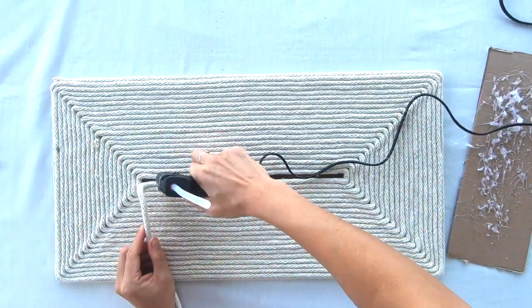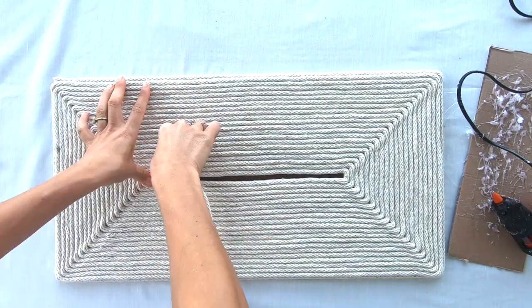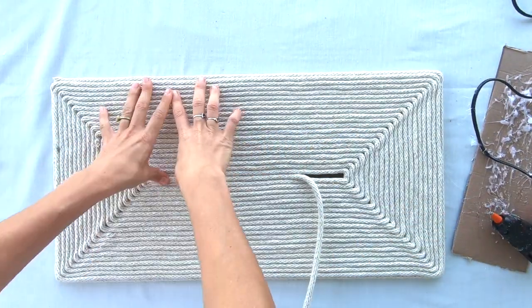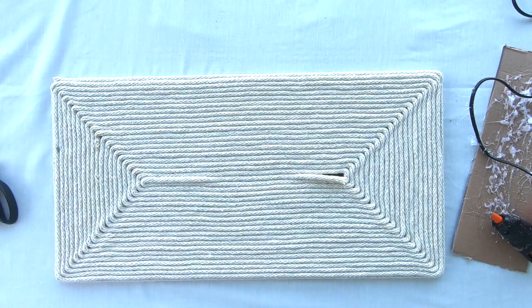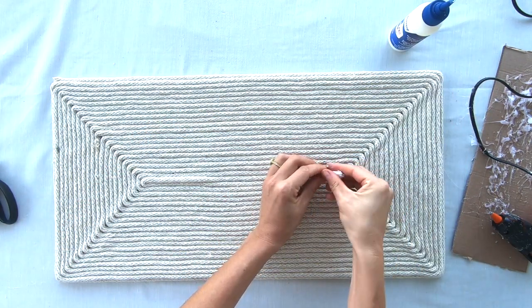Once you get to the center, try to push the last piece of rope as much as you can into the gap. And once you cut the edge, don't forget to finish it off with your fabric glue on the corners.